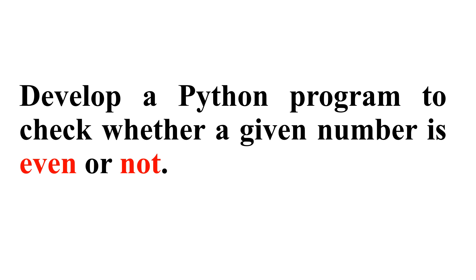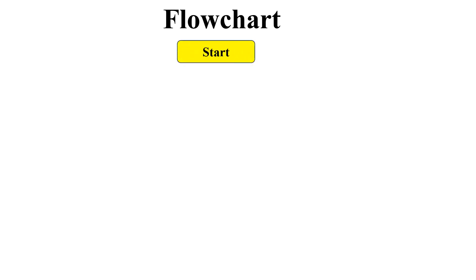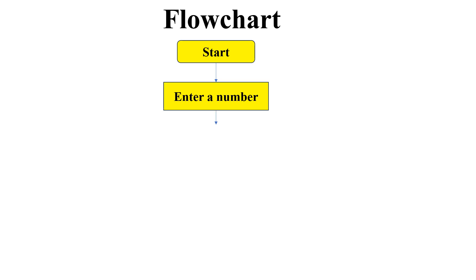Before writing the Python program, let's consider the flowchart. The flowchart gives the pictorial representation of the flow of the program, which is useful to write the program. Initially we start the program, then we ask the user to enter a number that they wish to check whether it is even or odd.